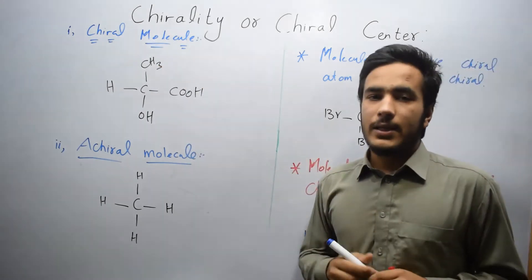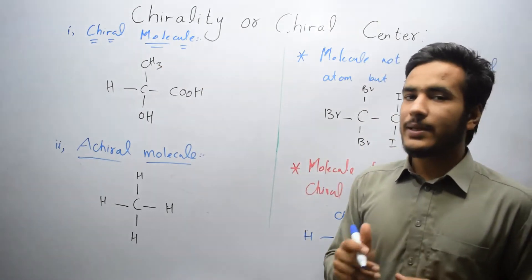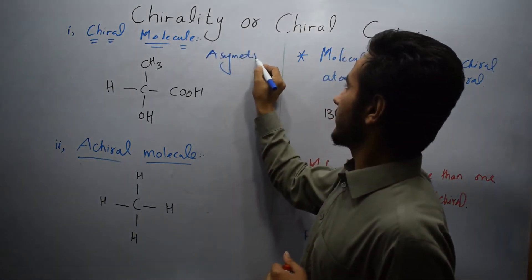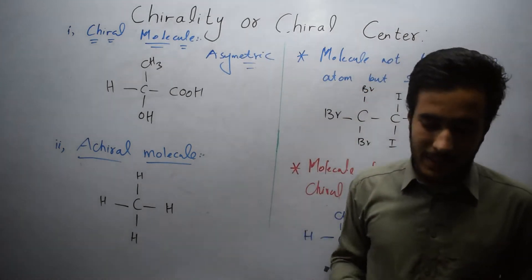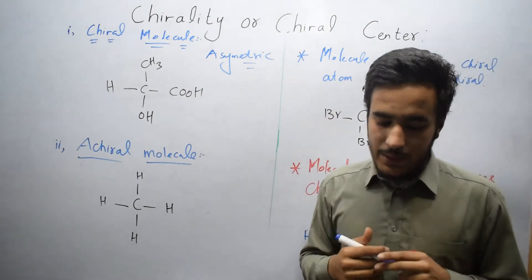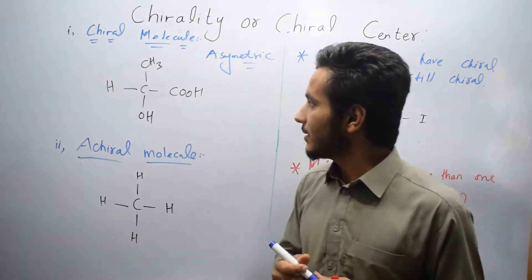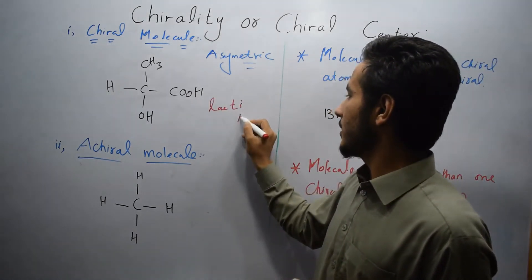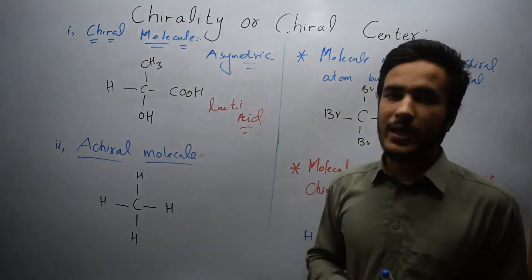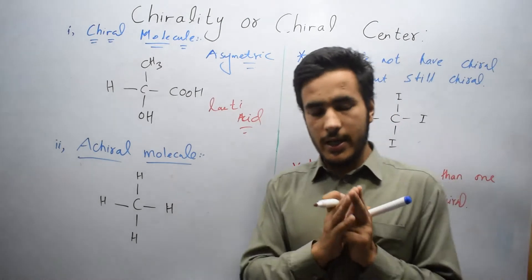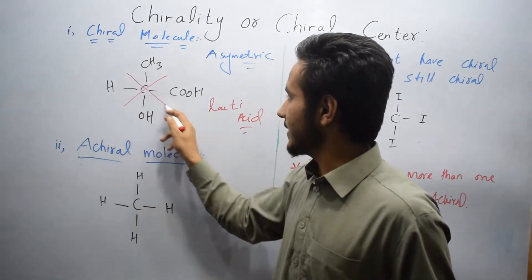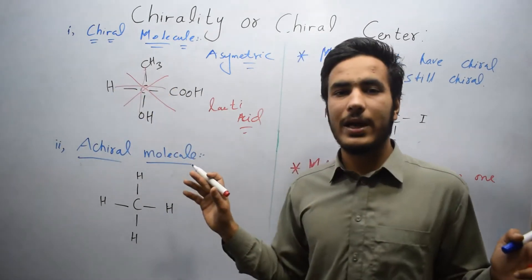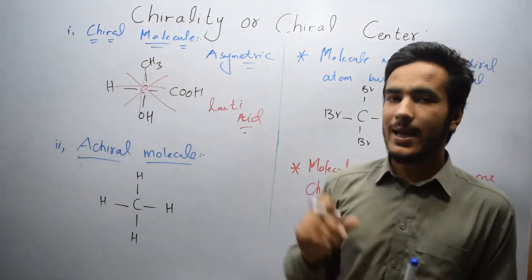A chiral molecule is also known as an asymmetric molecule. Why is it called asymmetric? Because this molecule cannot be divided into two equal parts. For example, lactic acid — this molecule cannot be divided into two equal parts in any proportion; it cannot be divided equally. Such a molecule is known as a chiral molecule.